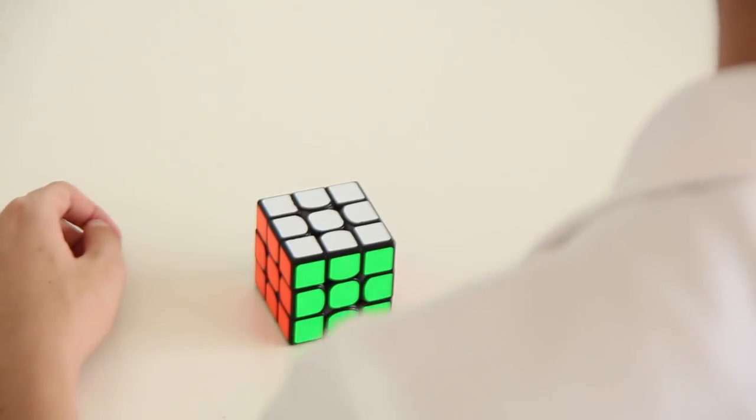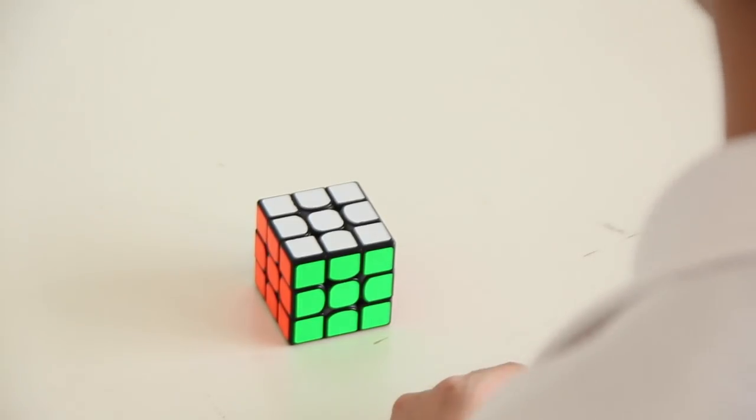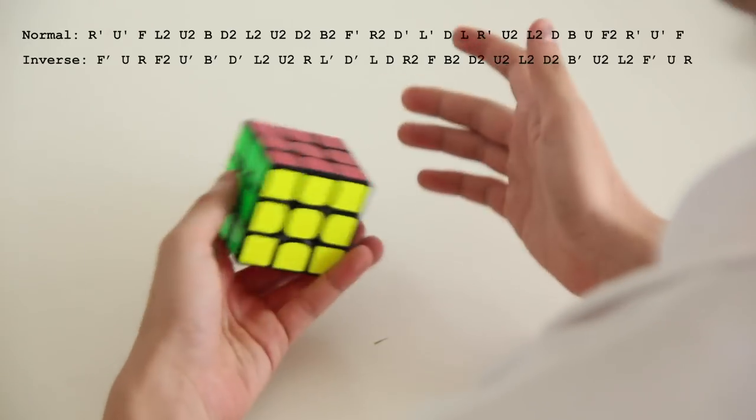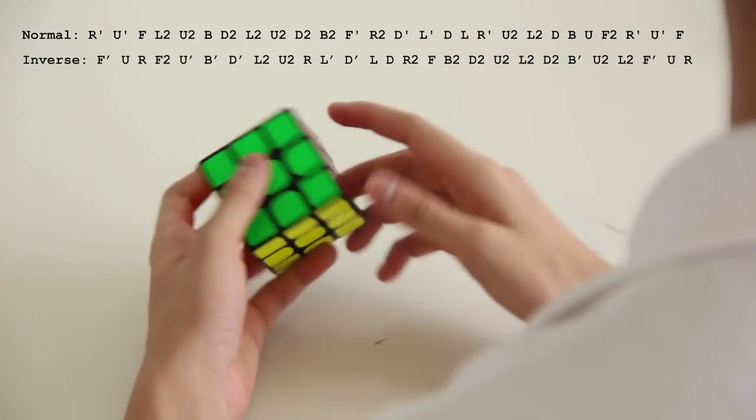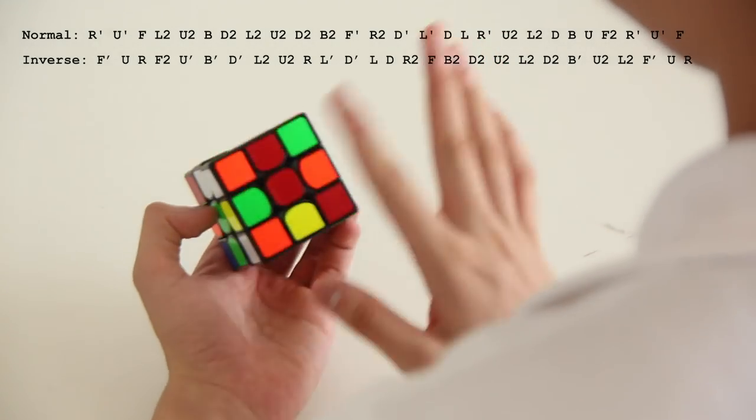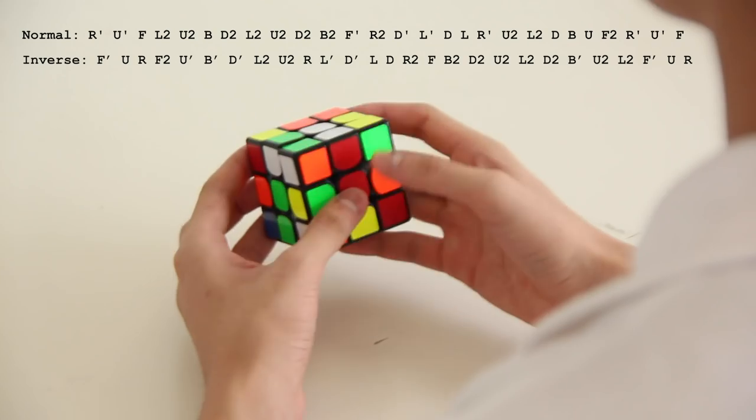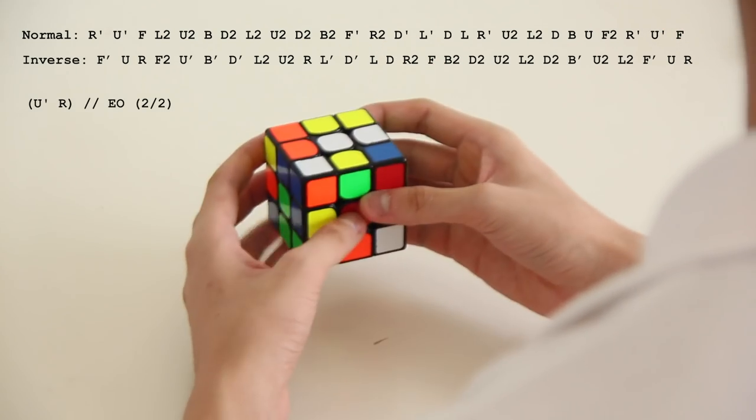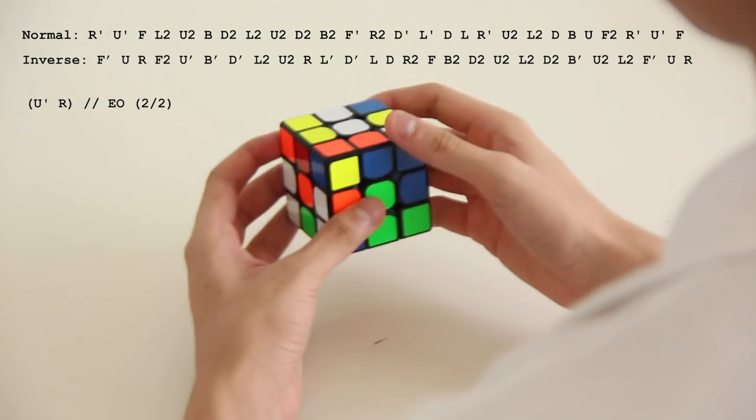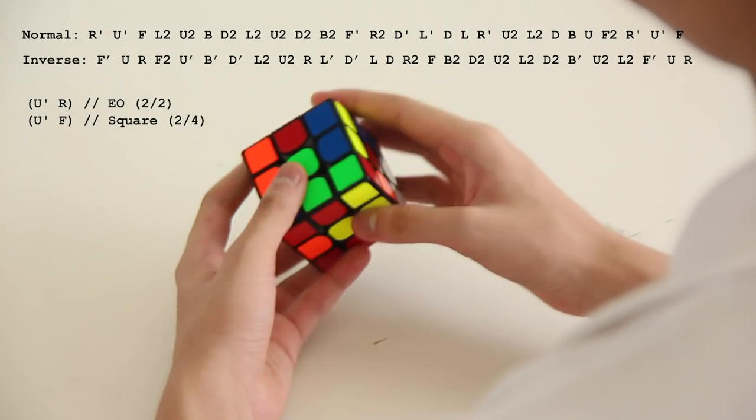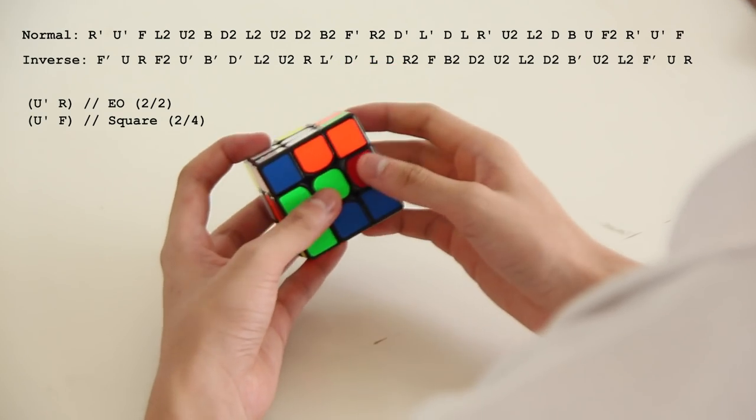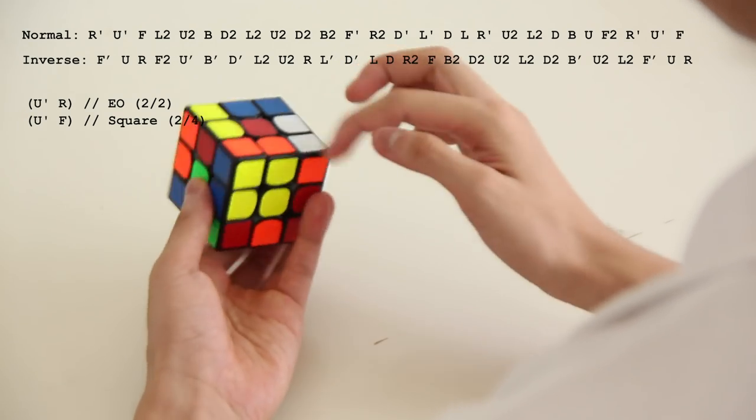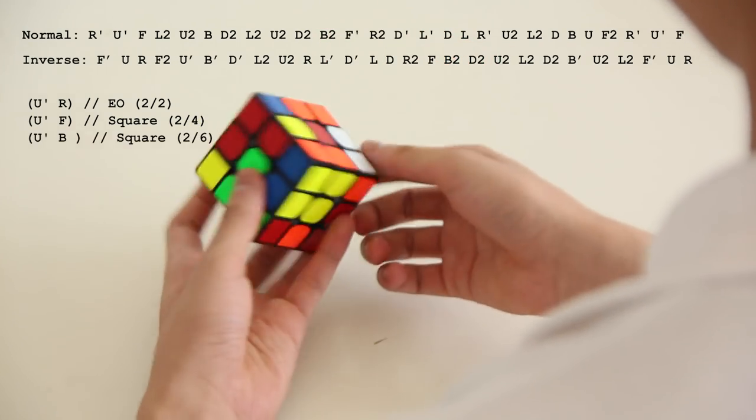But on the next round, I got something amazing. So let's just look at the first solve of the next round of the competition. So the entire skeleton was done on the inverse scramble. So firstly, on this face, there are only 4 bad edges, so EO can be solved by doing U', R. And then there's this easy square that can be made by doing U', F. And then another square can be made by using this block and this edge, U', B.